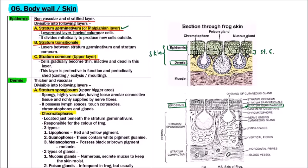So it is the lowermost layer having columnar cells. It divides mitotically to produce new cells outside or on upper surface. So the two layers which are above the stratum germinativum, that is stratum transitional and stratum corneum, are actually produced by the division of cells of stratum germinativum itself.